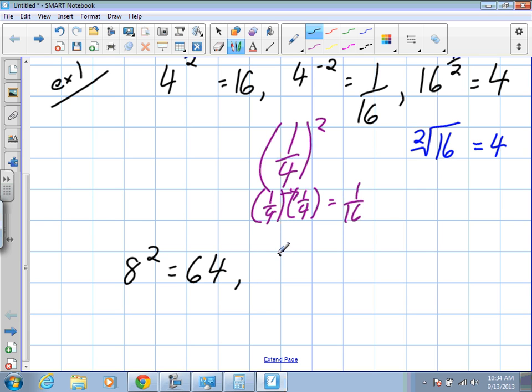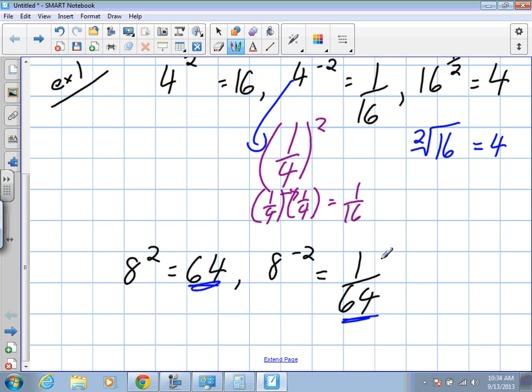If we have 8 to the power of negative 2, what will that equal? 1 over 64. So you start to notice a pattern. We don't have to go through all of these steps here. We know that it's just going to be 64 as the denominator in a fraction with a numerator of 1.